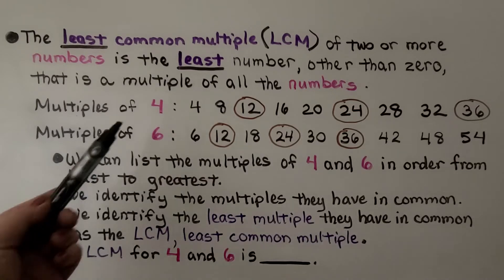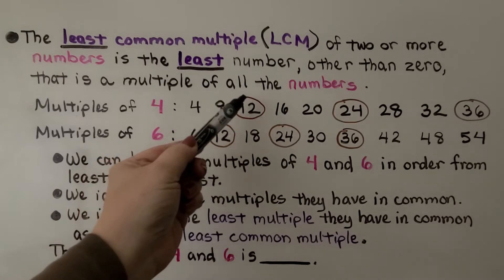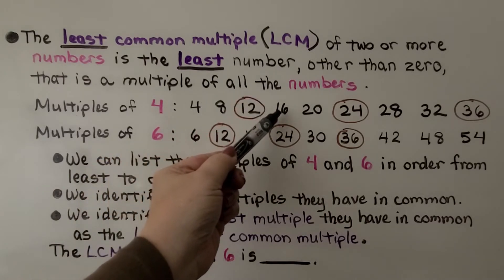We can list the multiples of 4. We think 4 times 1 is 4, 4 times 2 is 8, 4 times 3 is 12, 4 times 4 is 16, and we keep going.